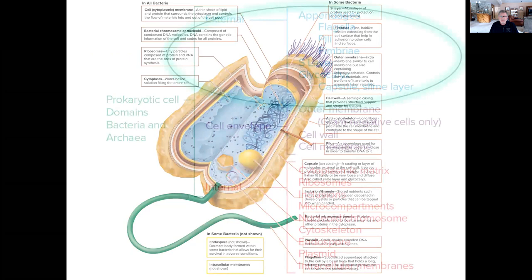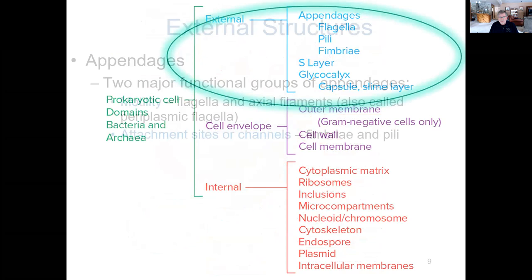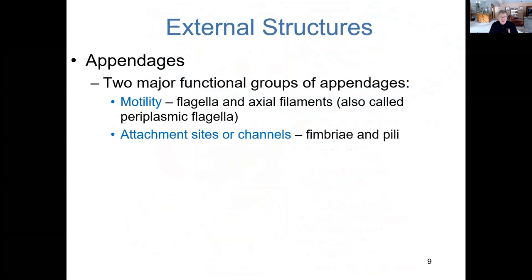Let's start with the external features. Eukaryotic cells have cilia and flagella — sperm cells have flagella — but prokaryotes don't have cilia. They do have flagella and other external structures. We'll discuss axial filaments or periplasmic flagella that allow movement, as well as other structures that help the cell attach to substrates.